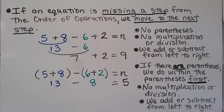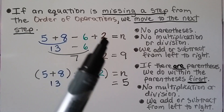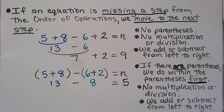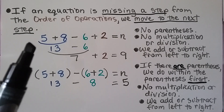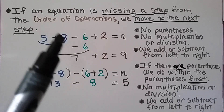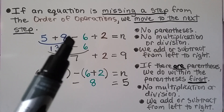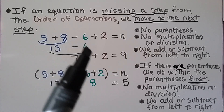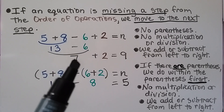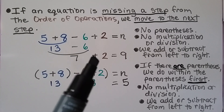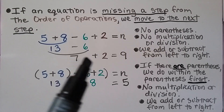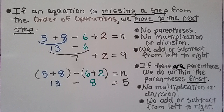If an equation is missing a step from the order of operations, move to the next step. For 5 plus 8 minus 6 plus 2: there are no parentheses and no multiplication or division, so we just add or subtract from left to right. 5 plus 8 equals 13, then 13 minus 6 equals 7, then 7 plus 2 equals 9.